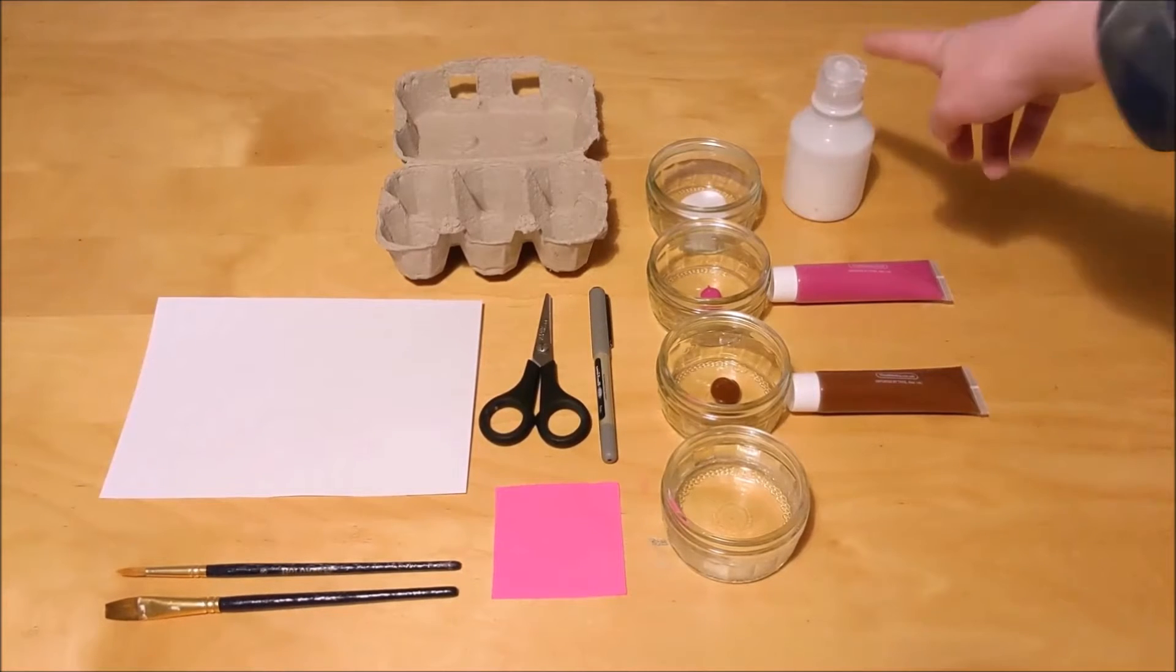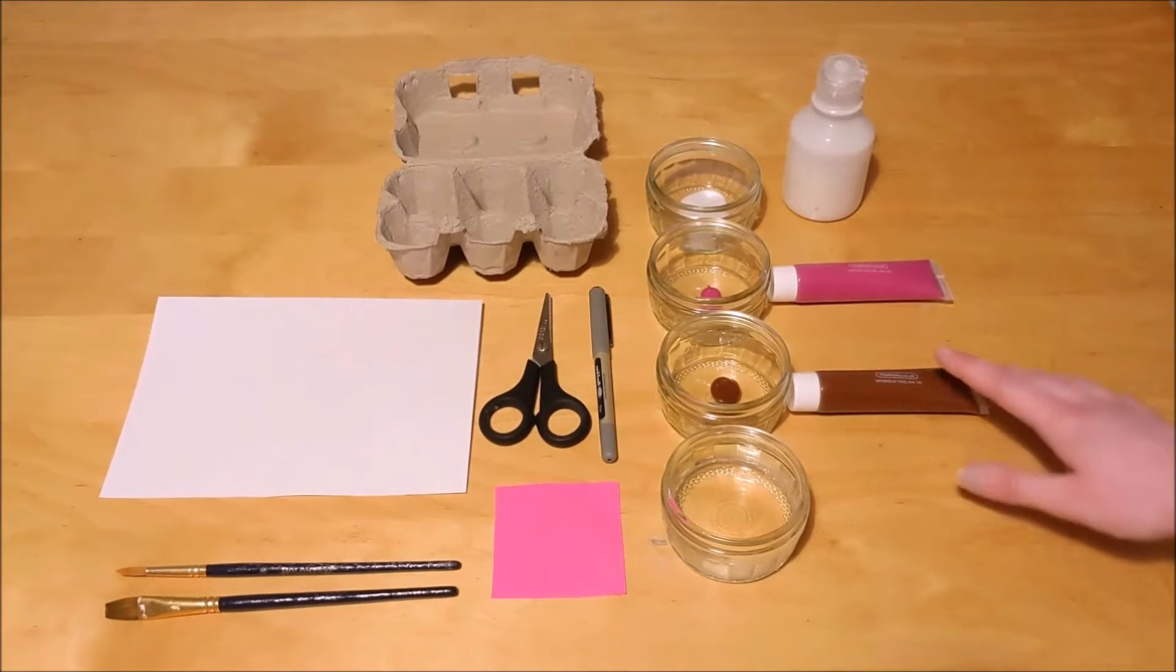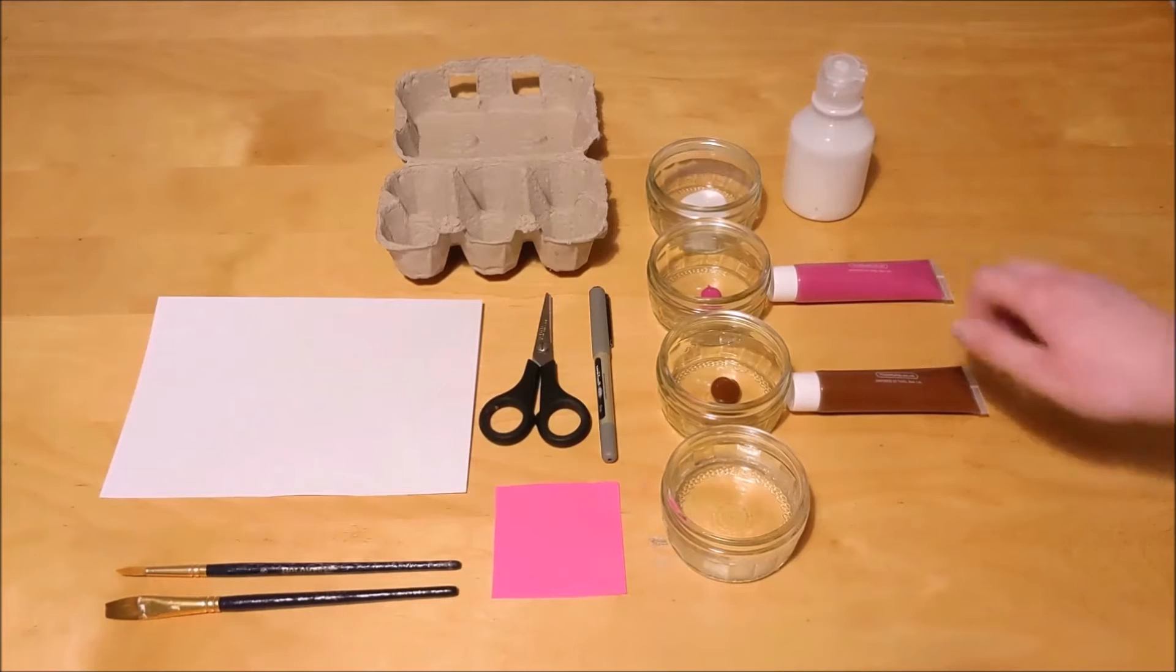For this craft you're going to need some PVA glue, some pink paint, some brown or grey paint—whatever color you want your mouse to be. Don't worry if you don't have paint; felt tip pens will do the job as well.